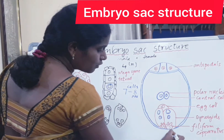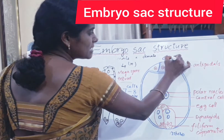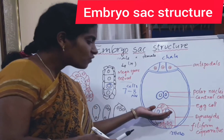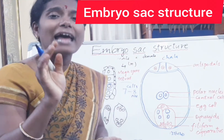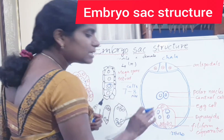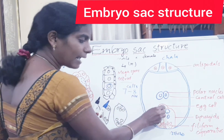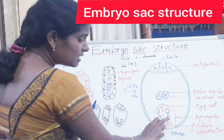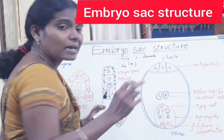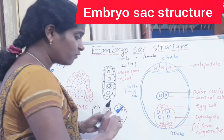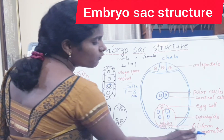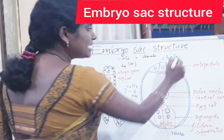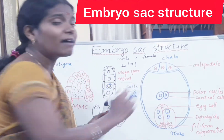On the micropylar region side, there are 3 cells called the egg cell apparatus. The egg cell apparatus consists of one egg cell and 2 synergids. The synergids have special cellular thickening — finger-like structures called the filiform apparatus. The role of the filiform apparatus is to guide the entry of the pollen tube inside the embryo sac.